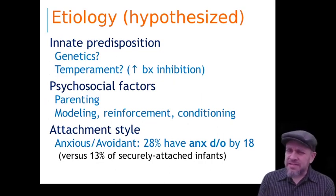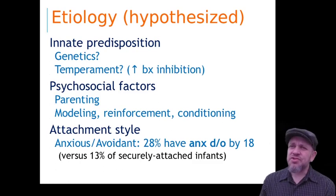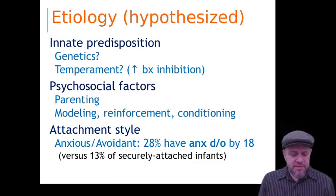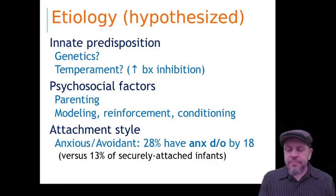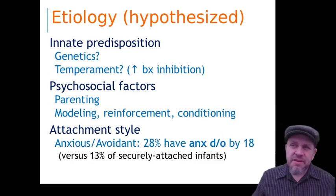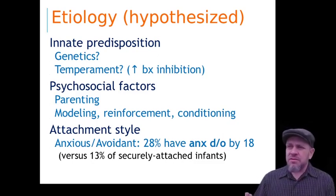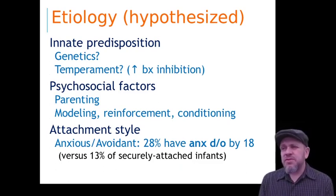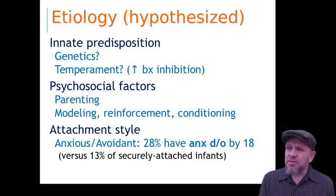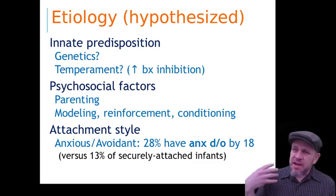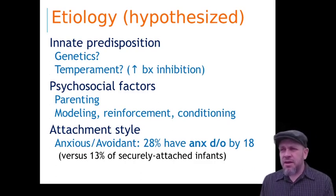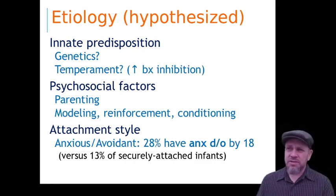The etiology for all of these things is hypothesized to be a diathesis-stress type etiology. People have a genetic predisposition, and then based on that, events in their life — which might be as fundamental as the chemical composition of fluid in the womb, or being abused or neglected as a child, or having a terrible experience like being badly bitten by a dog when young — can turn the potential for a disorder into an actual disorder.